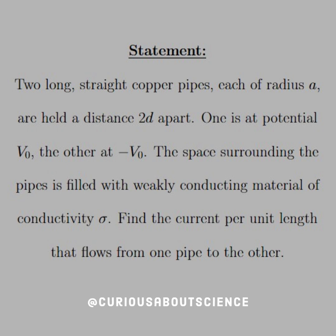The statement reads: Two long, straight, copper pipes, each of radius A, are held at a distance 2D apart. One is at potential V-naught, the other is at negative V-naught. But, the space surrounding the pipes is filled with weakly conducting material of conductivity sigma. Find the current per unit length that flows from one pipe to another.